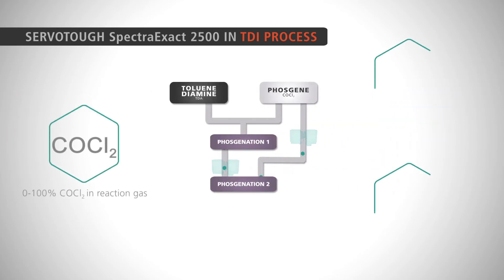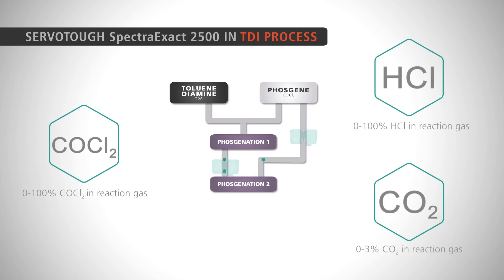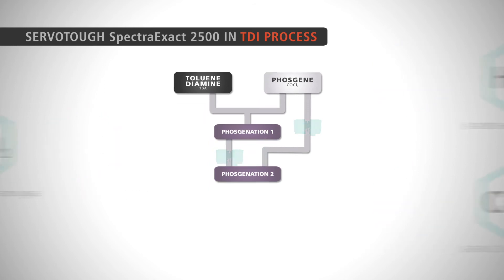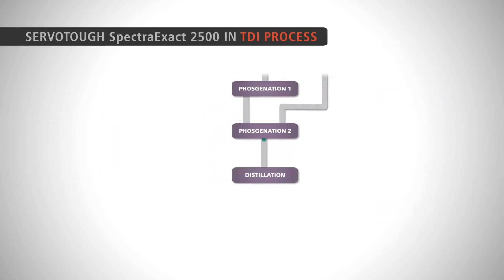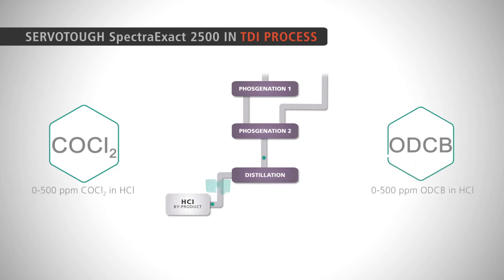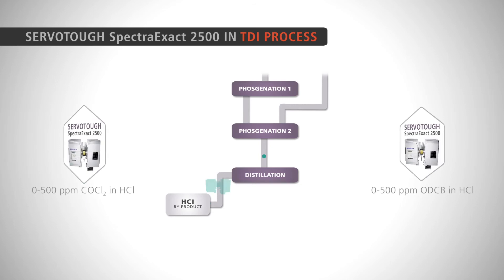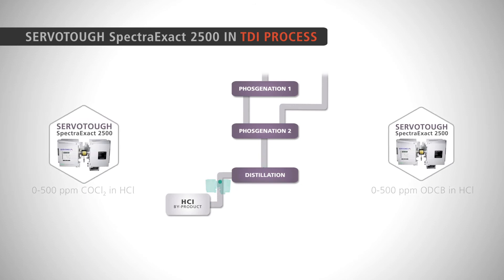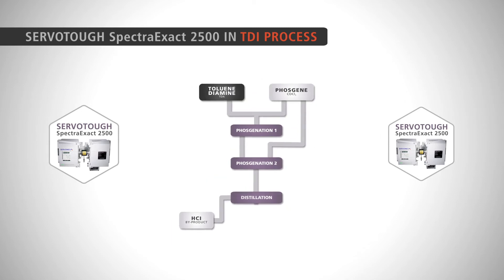While phosgene and hydrogen chloride are separated and recycled into the process, the mixture is then purified by distillation, with the hydrogen chloride byproduct again monitored for phosgene and solvent impurities. The Spectra Exact 2500 includes high-integrity sample cells with a helium leak test option, which is ideal for the measurement of toxic samples.